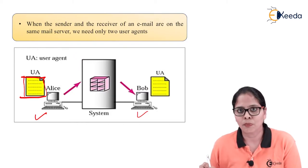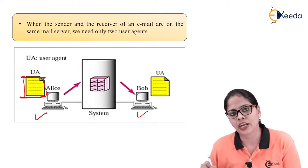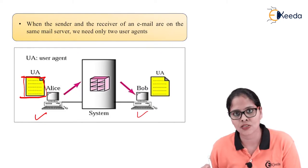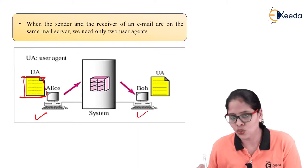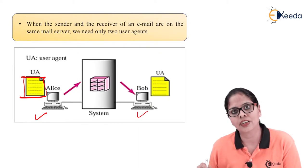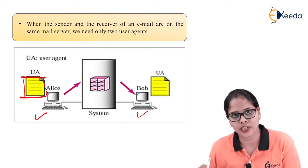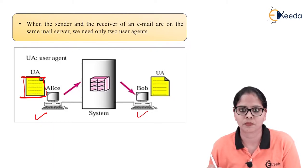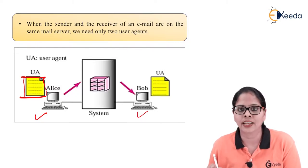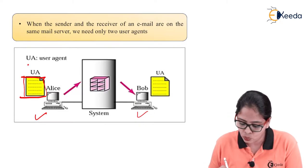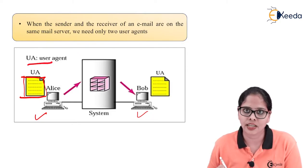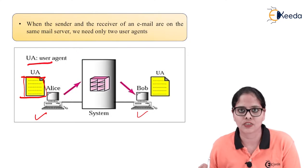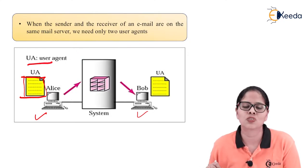Bob, to receive or retrieve that mail, has to open his mailbox. Bob uses his user agent and with the help of that, he can retrieve the mail and read it. Alice and Bob are connected to the same system, so the mail server is directly connected to both sender and receiver. For that, you need only two user agents — one at the sender side and one at the receiver side. That is the first, very simple scenario.